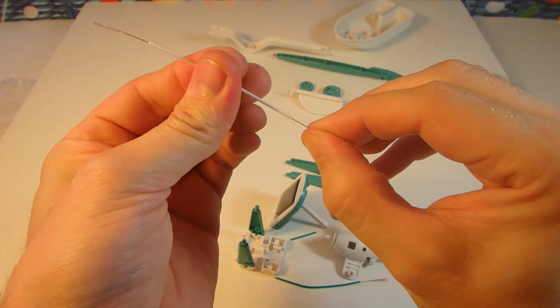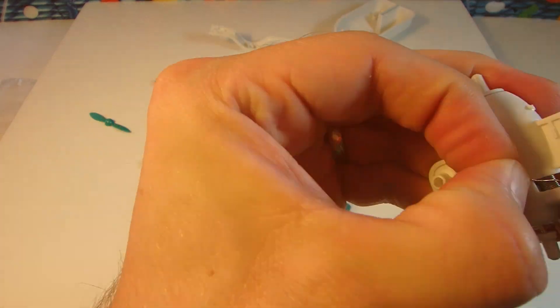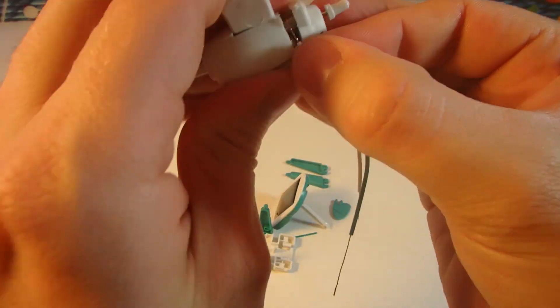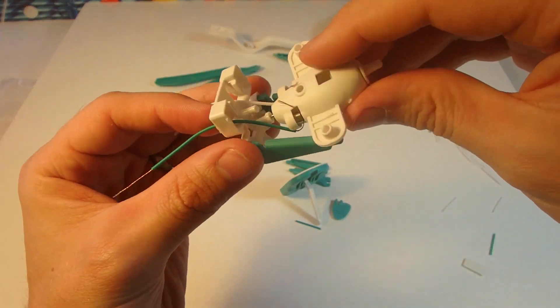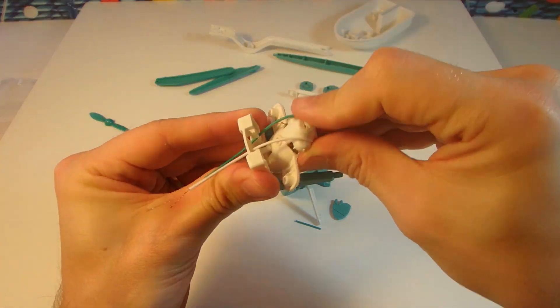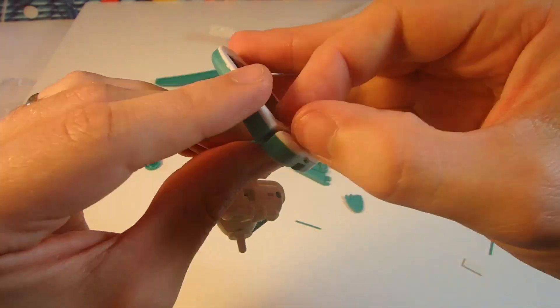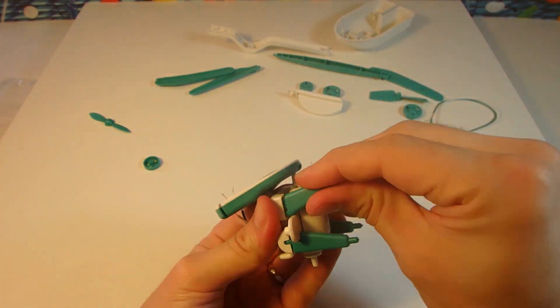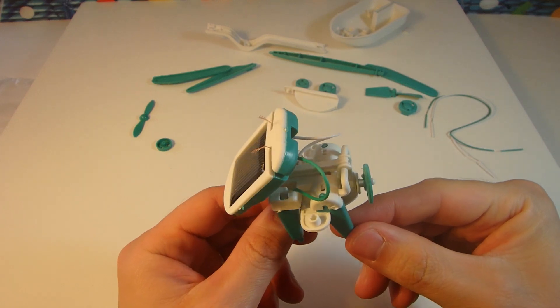Just twist the ends of all the wires so they don't come apart. We got our solar puppy all put together. We will meet you outside where it's nice and sunny and see how this little dog runs.